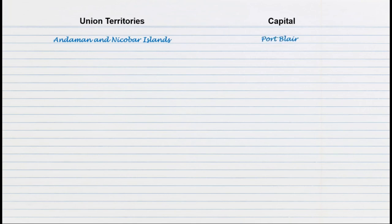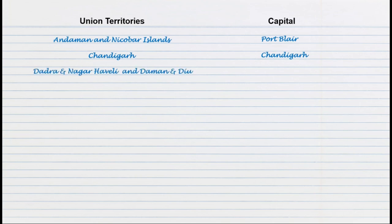Now we'll learn Union territories and their capitals. Andaman and Nicobar Islands, Port Blair. Chandigarh, Chandigarh. Dadra and Nagarhaveli and Daman and Dew, Daman.